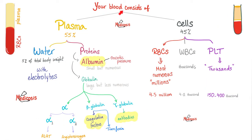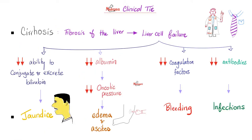Your blood is made of plasma and cells; plasma is water and proteins — albumin and globulin — both made by the liver. If you have cirrhosis — fibrosis of the liver with liver cell failure — you can't make albumin, your oncotic pressure drops, fluid oozes out of your vessels into the interstitial space causing edema and ascites. You're also not making globulin: beta globulins are important for coagulation — without them you'll bleed; gamma globulins are antibodies — without them you get infections. Moreover, you've lost your ability to conjugate and excrete bilirubin, so you'll develop jaundice.